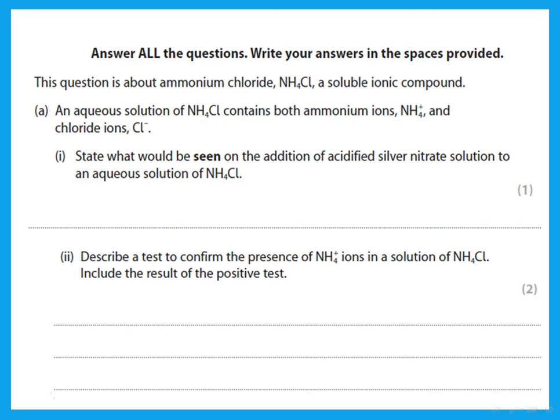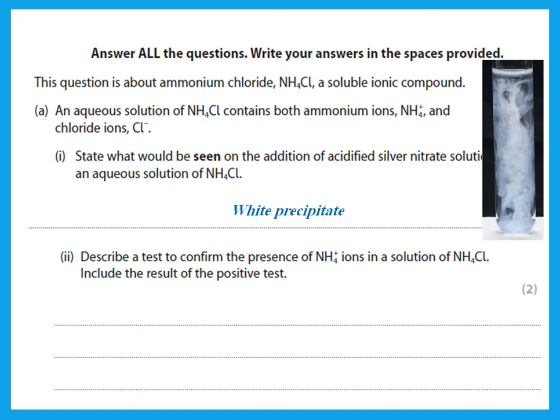Silver nitrate is a test for chloride. When you add silver nitrate to something that has chloride, like ammonium chloride, you are supposed to see a white precipitate forming. Please do not write 'white solution' or just 'white.' Now describe a test to confirm the presence of ammonium ions.